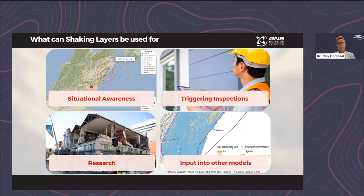What can Shaking Layers be used for? There are a large number of uses. Firstly, it can be used for situational awareness — it provides information on shaking distribution across the country, so we can see the shaking intensity in different locations or centers as well as the size and area of severe shaking that might cause damage. It can be very useful for things like emergency response. It can also be used for triggering inspections — if you are an owner of infrastructure, building assets, or other exposure elements across the country, you can get estimates of shaking at those locations to trigger further steps such as inspections following an event.